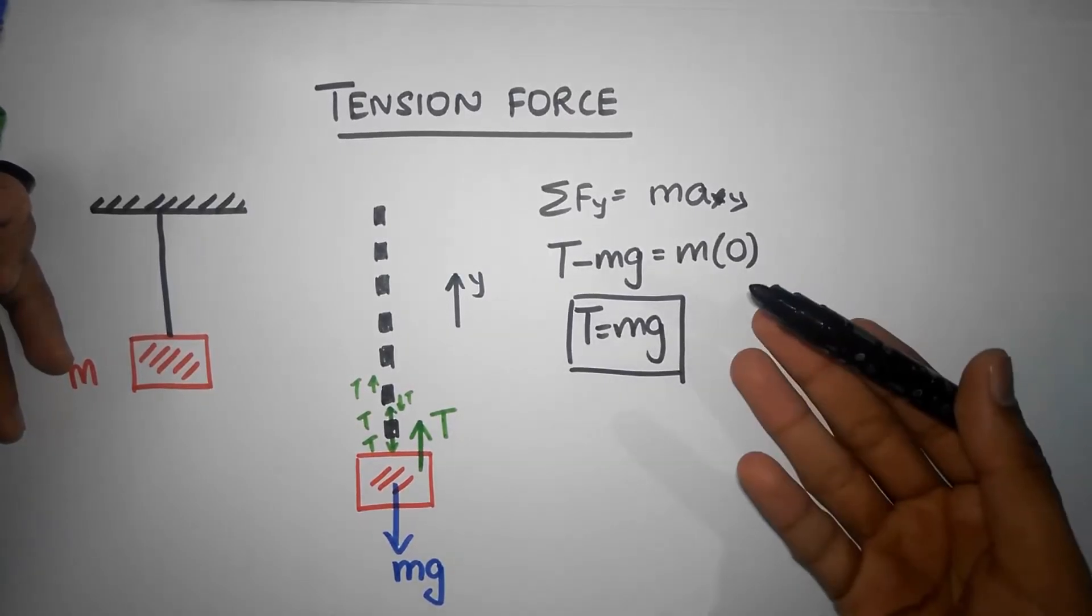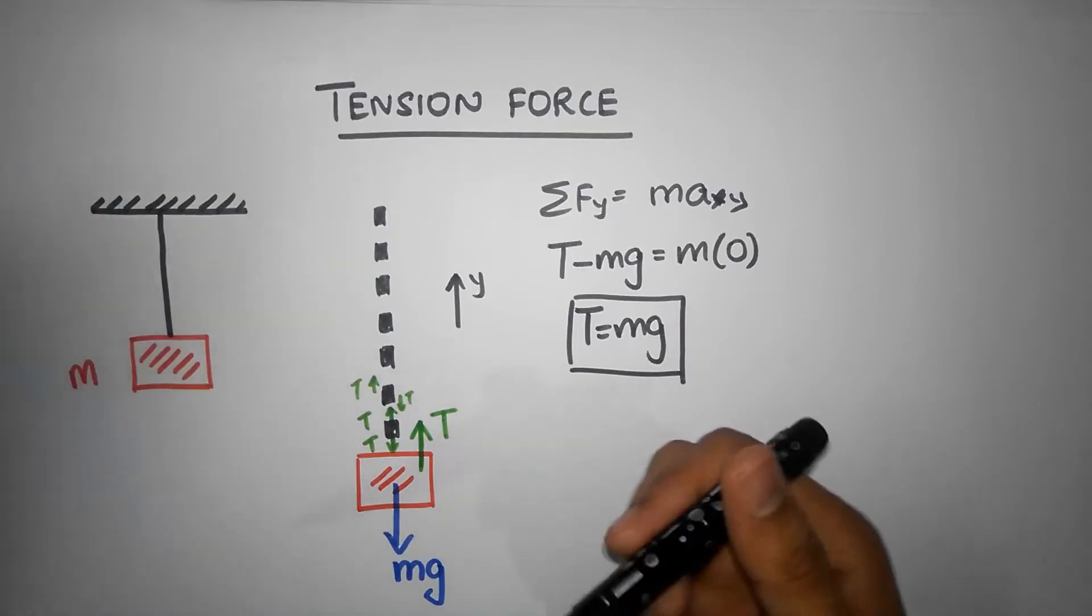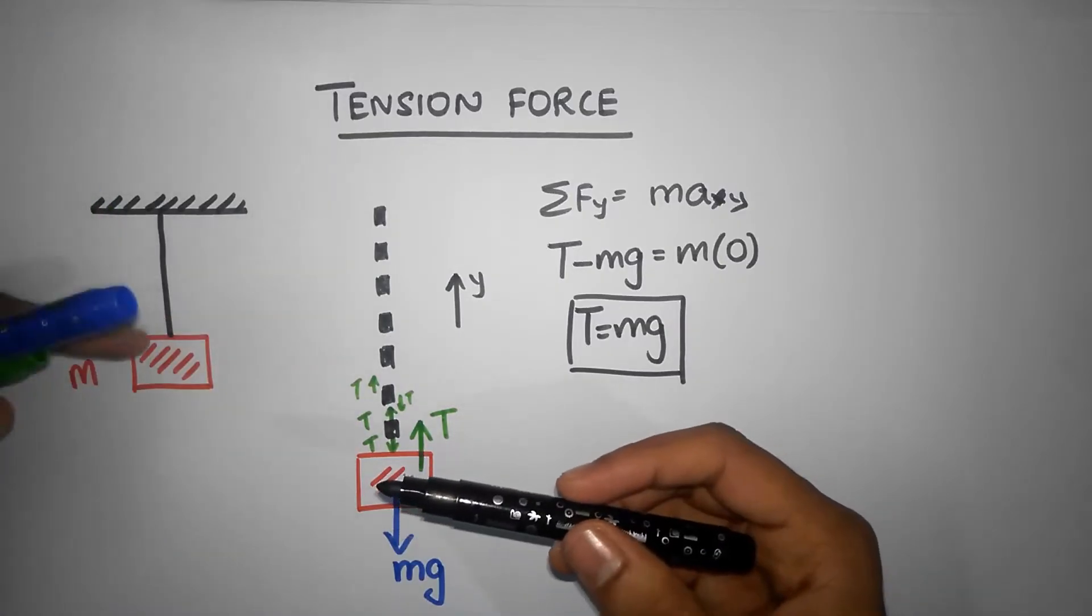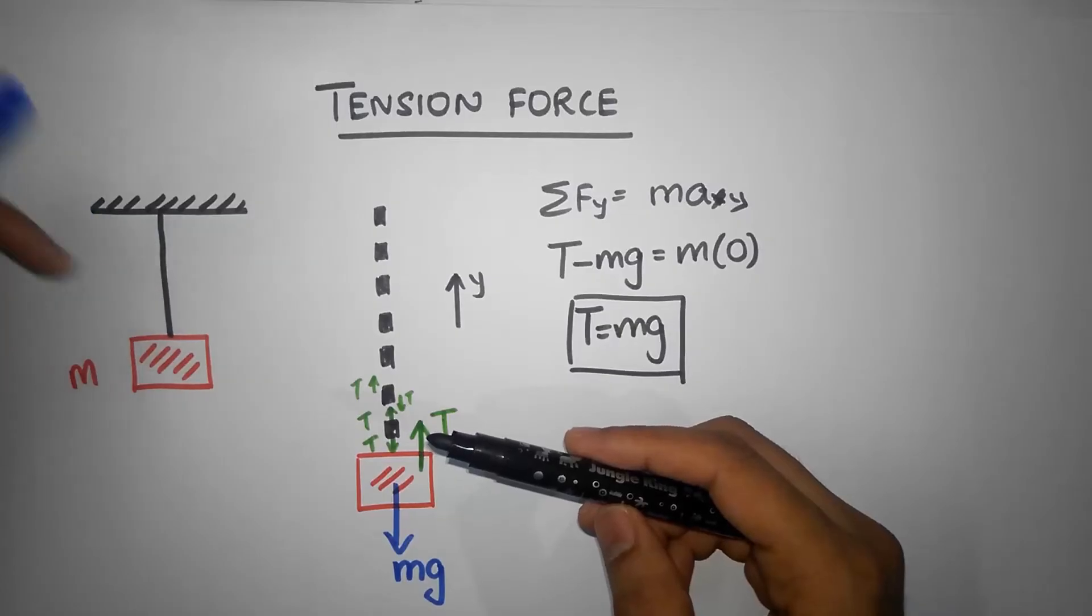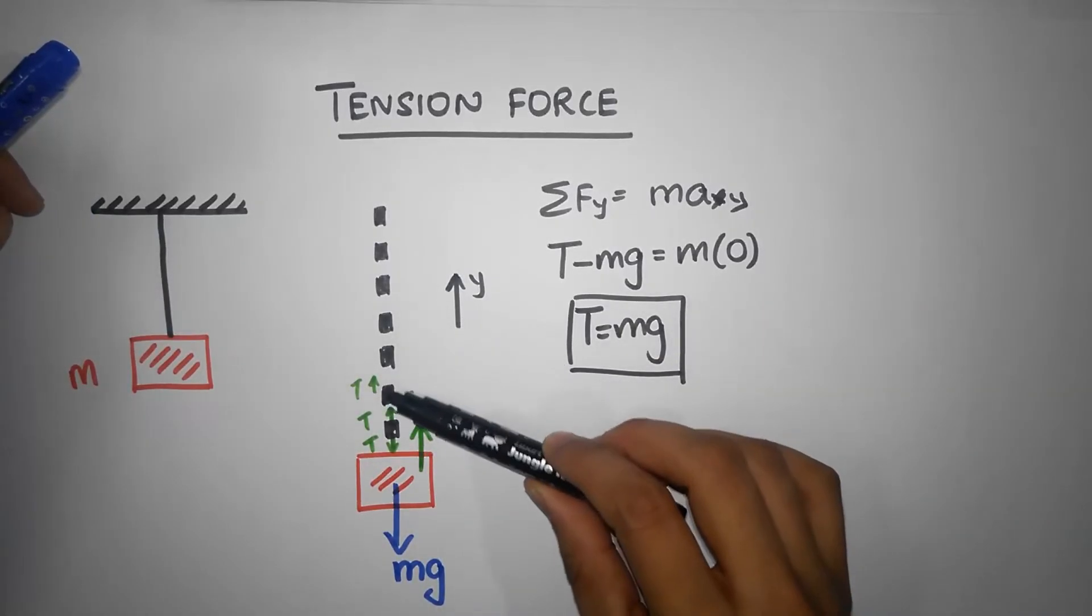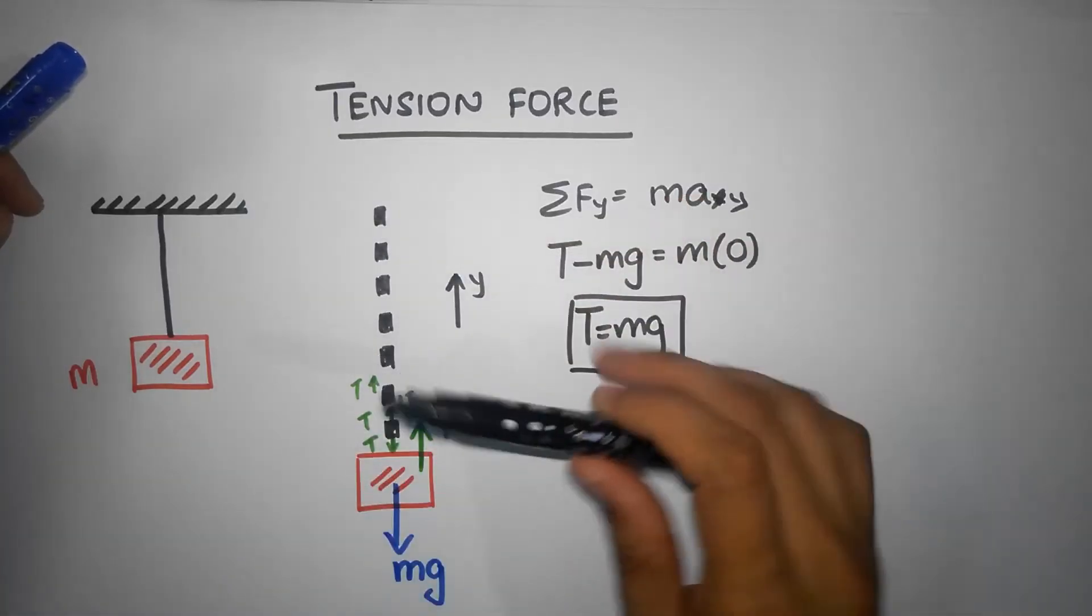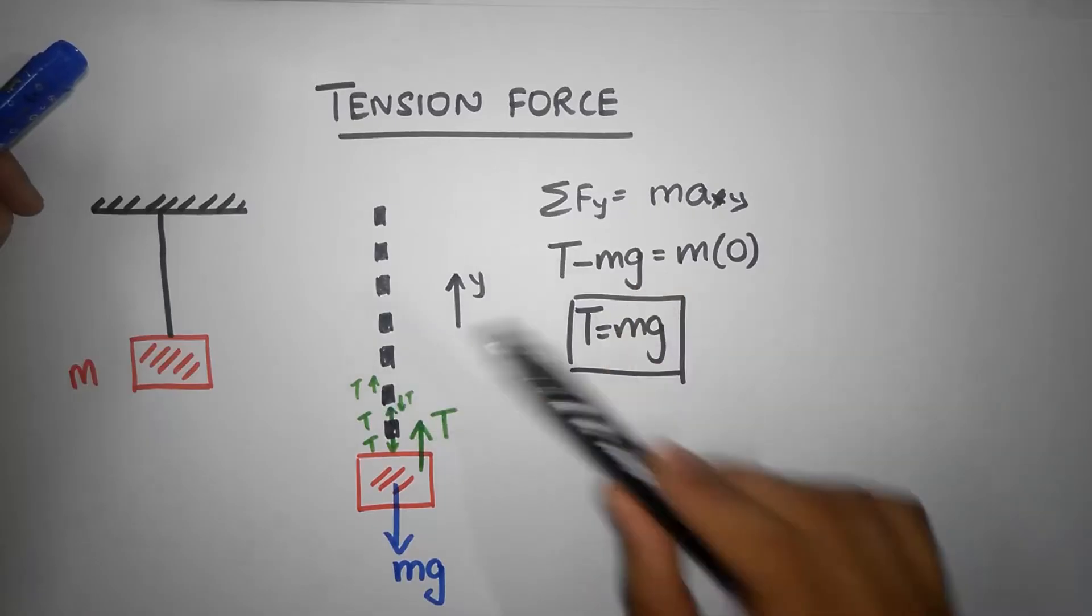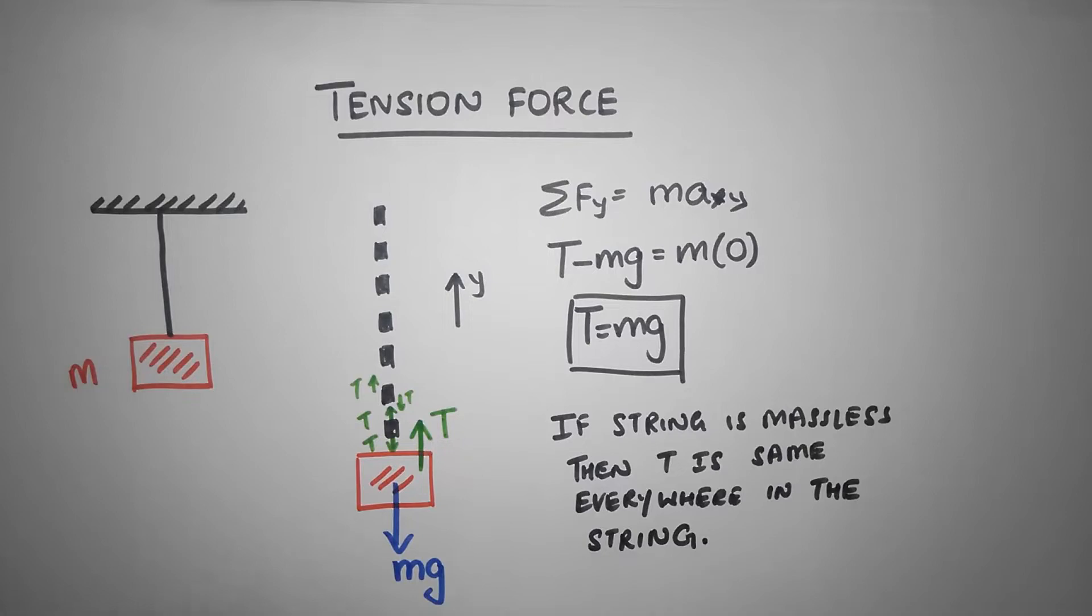This is not always the case; it's the case in this particular example. We're always going to assume, at least most of the time, that the strings are massless. And if the strings are massless, the tension force everywhere in the string must be exactly the same. It should remain exactly the same. So that's one thing to remember.